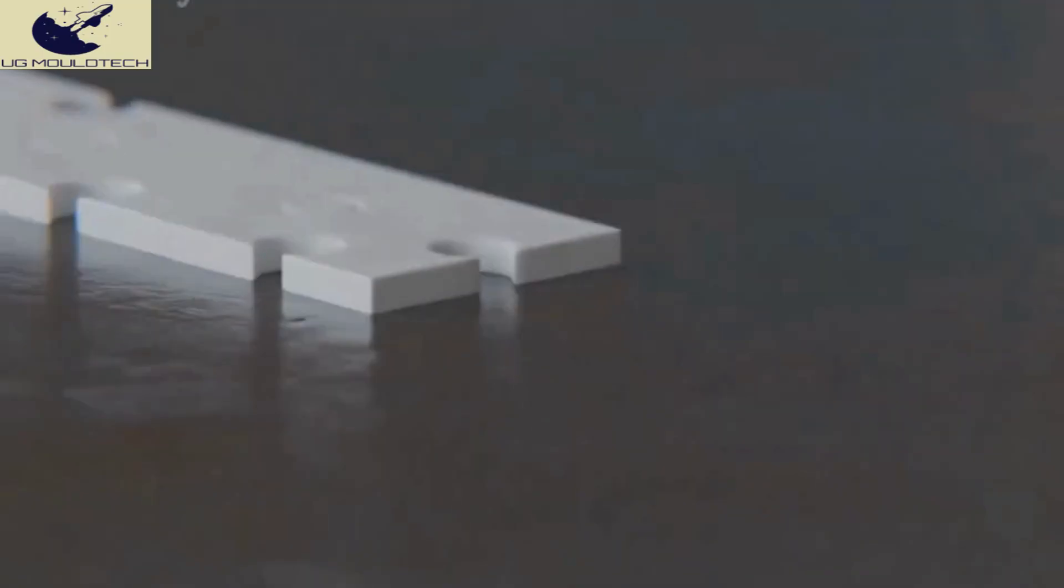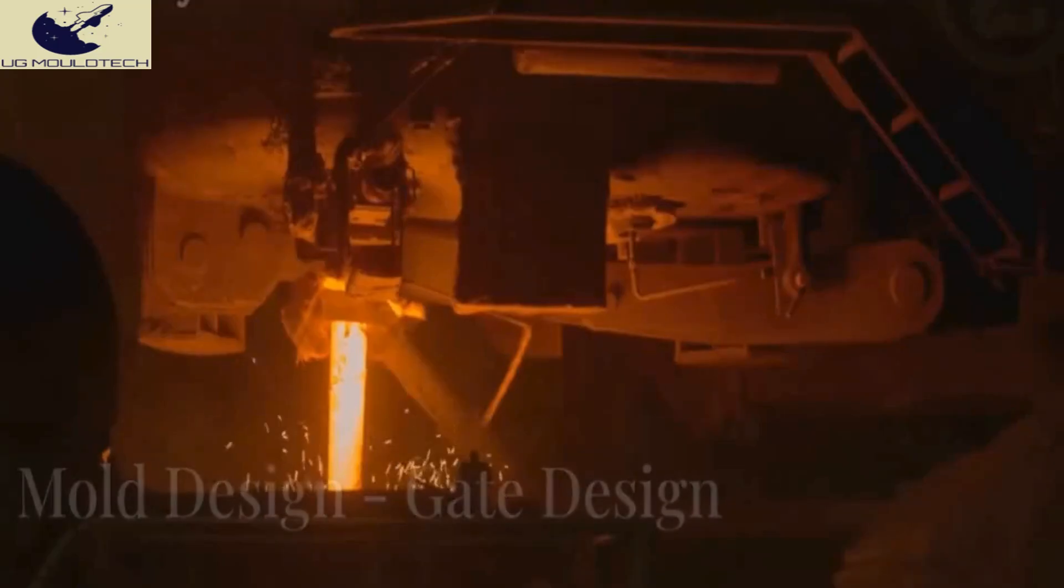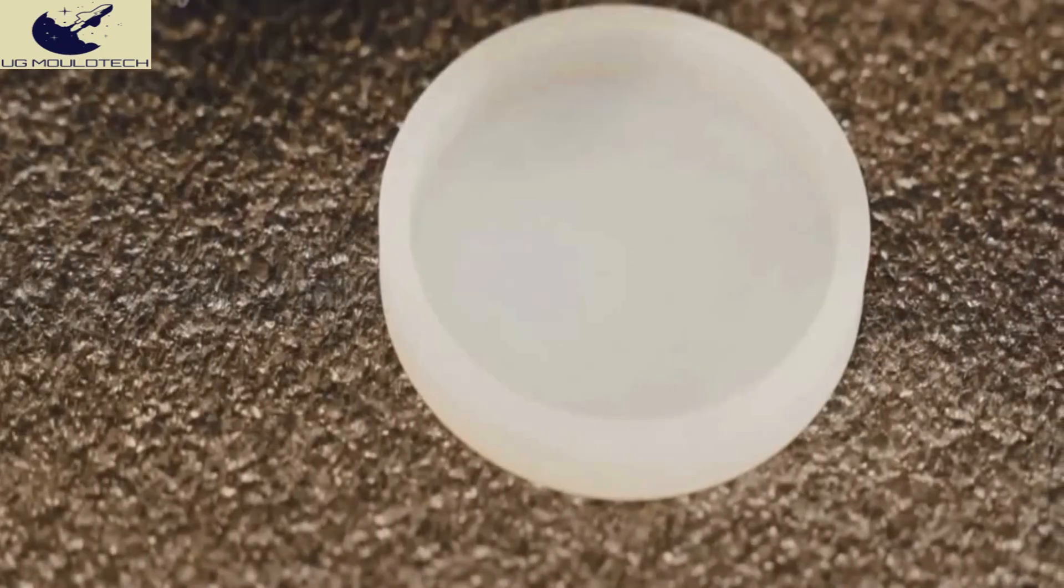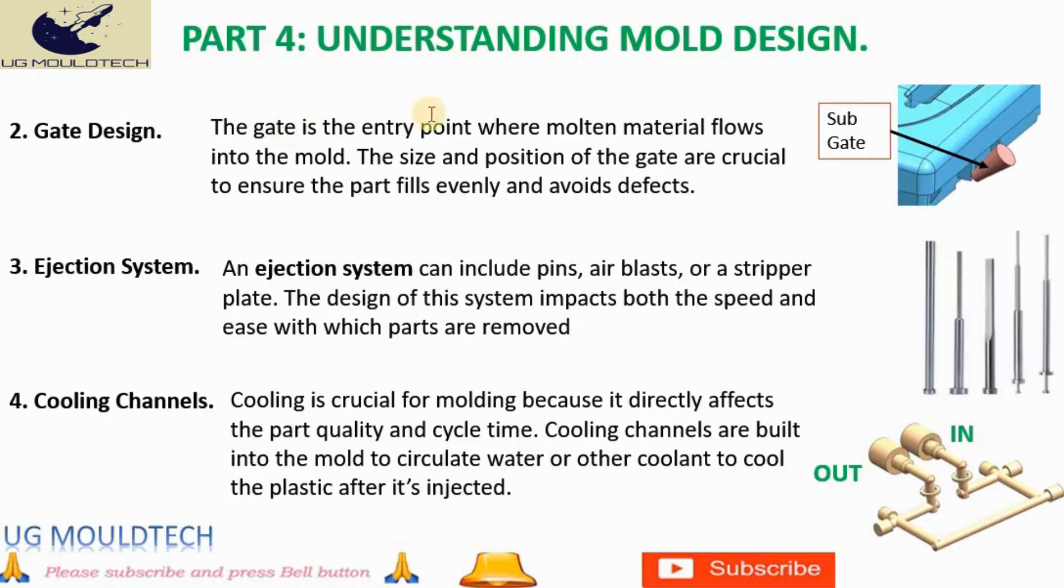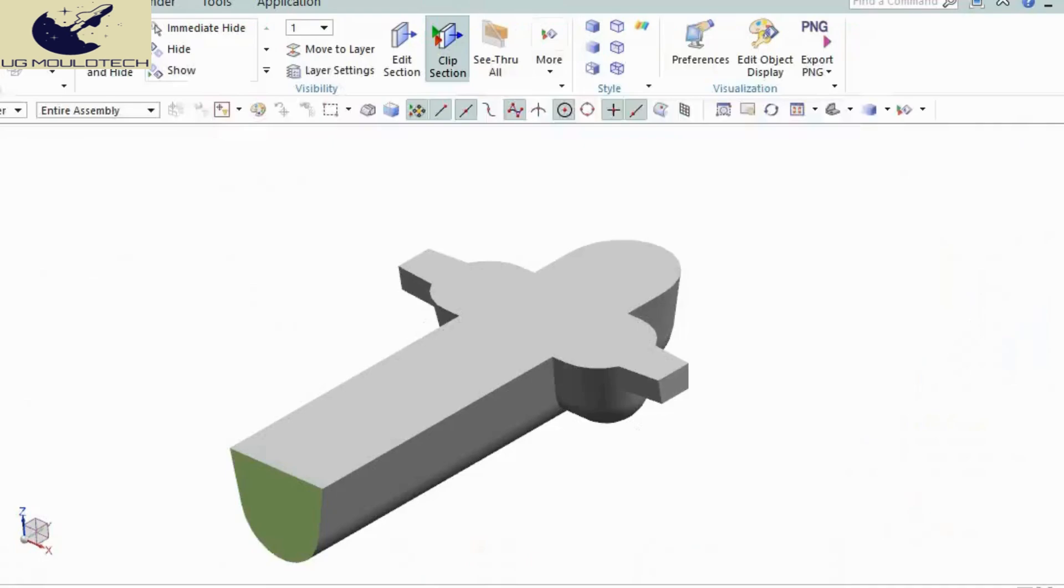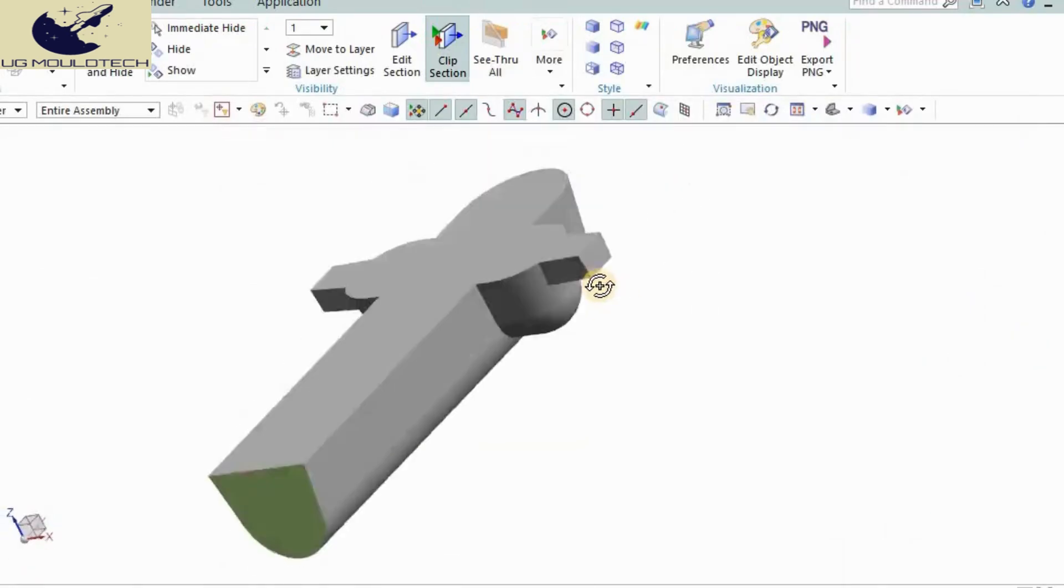Think of it like a two-piece puzzle. When they align seamlessly, they form the ideal space for molding. The gate is the critical entry point where molten material flows into the mold cavity. The size, shape, and position of the gate are crucial to ensure the part fills evenly, minimizes stress, and avoids defects.